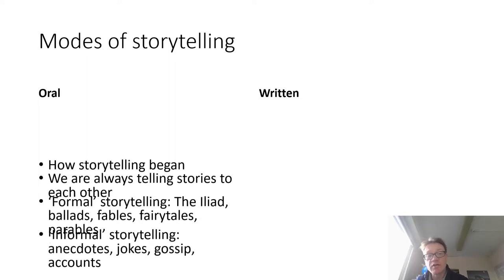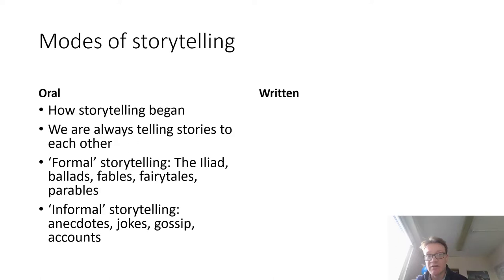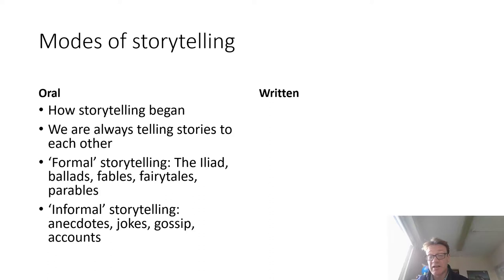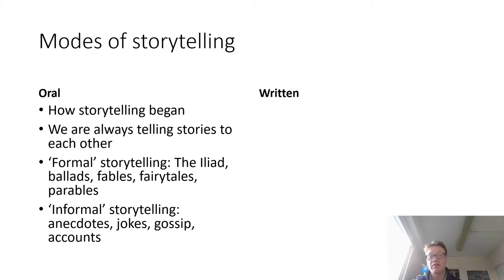There are two main modes of storytelling. The first is oral, and this is how storytelling began — we're always telling stories to each other. We could roughly divide that into formal storytelling, such as a work like the Iliad — a poem by someone we call Homer — where people gather around to especially listen, along with fairy tales, ballads and parables. The informal storytelling goes on all the time: anecdotes, jokes, gossip, accounts of things.